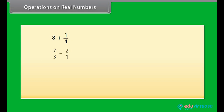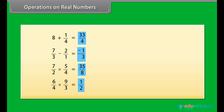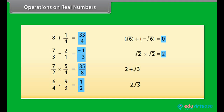Can you tell what we get if we add, subtract, multiply, or divide two rational numbers? We will get a rational number. But if we add, subtract, multiply, or divide irrational numbers, the result is not always irrational. Now think: what do we get if we add or multiply a rational number with an irrational number? The answer we get is an irrational number.